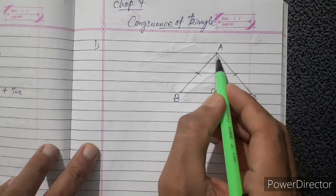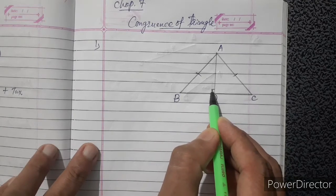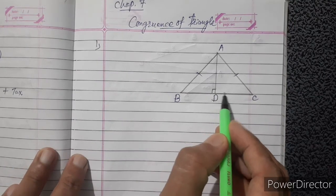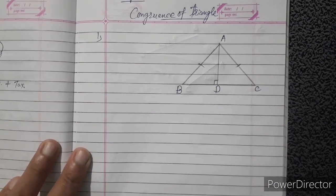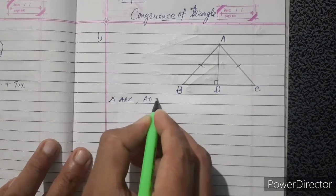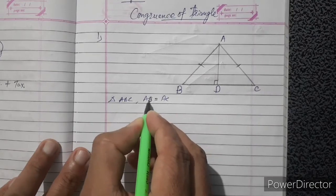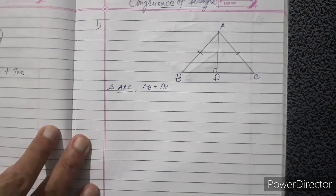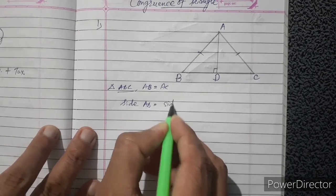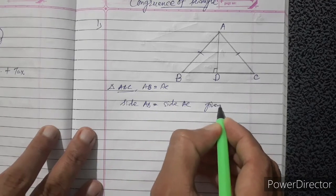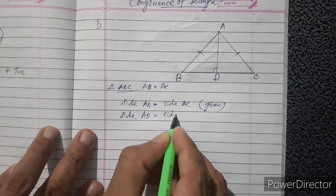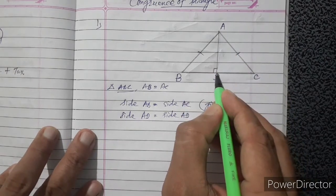I draw line segment AD which is perpendicular to BC, making a 90-degree angle. In triangle ABC, side AB equals side AC, which is given because it is an isosceles triangle. And side AD equals side AD — AD is the common side.